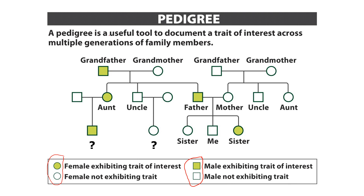A line going straight from one individual to the next with no bends indicates a sexual relationship between those individuals. If a line comes down from that, a single line down indicates a child that came from that couple. In this case, the line comes down and branches to three children. Some of those children then had sexual relationships and had children of their own. Siblings share a branching line — not a straight connecting line — indicating they are brother and sister.